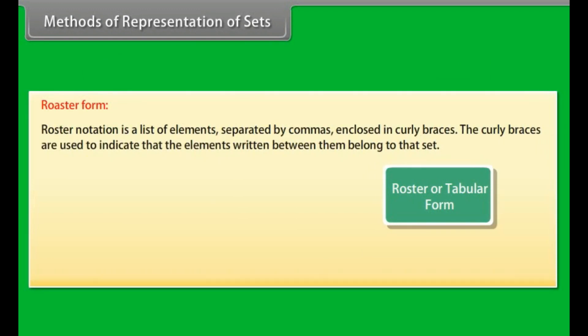Roster form. Roster notation is a list of elements separated by commas enclosed in curly braces. The curly braces are used to indicate that the elements written between them belong to that set. Let's look at some examples of sets listed with roster notation.